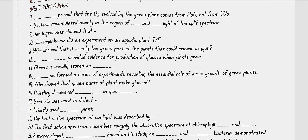Jan Ingenhousz showed that sunlight is essential for photosynthesis. He did an experiment on an aquatic plant. He also showed that it is only the green part of the plant that could release oxygen.